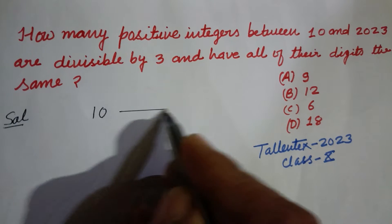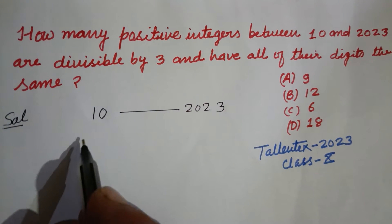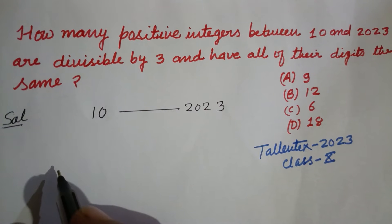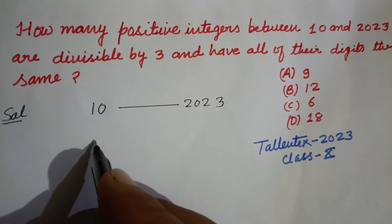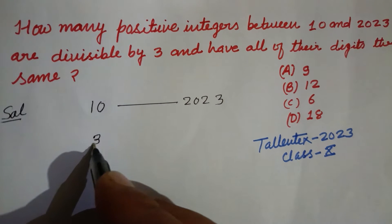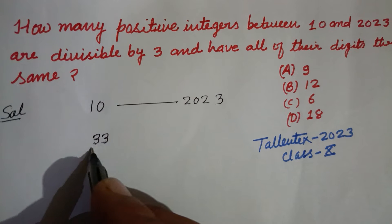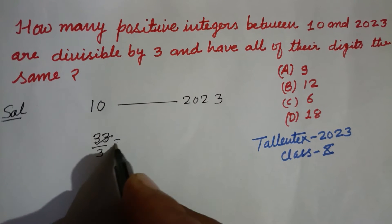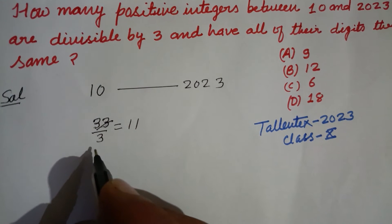So here, digits are asked between 10 to 2023. The first number having the same digit and divisible by 3 is 33, which when divided by 3 gives 11. Next is 66.